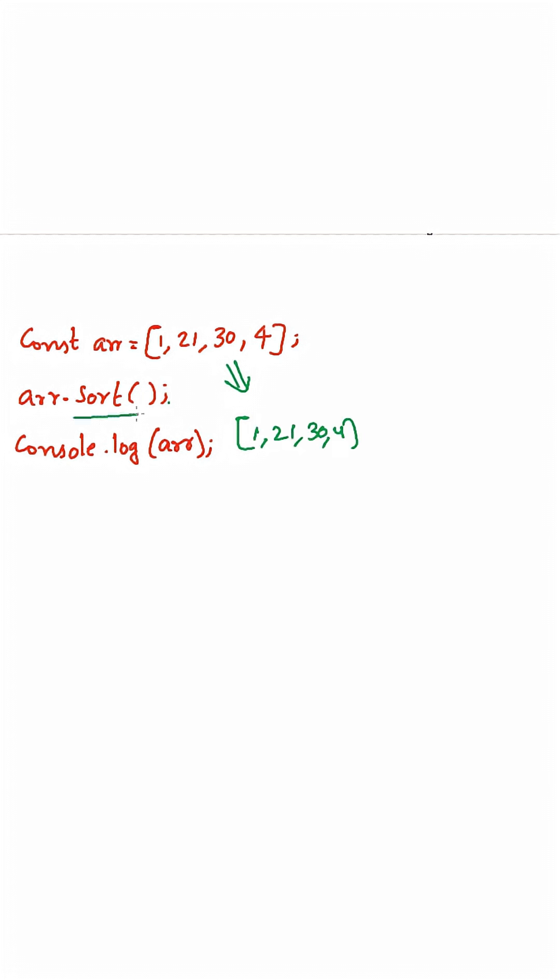Here we are using the sort method on this array. What does this sort method do? It will convert each element of the array into a string.